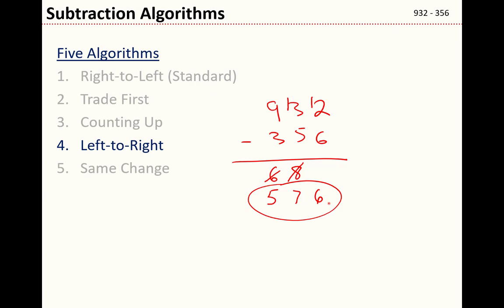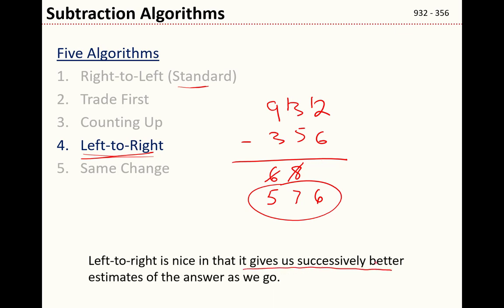I really like this method a lot. If I could magically wave a wand and change the standard method into left to right, I would do this because it gives us successively better estimates of the answer as we go. If I had just stopped as soon as I got the 6, I would have known that my answer was approximately 600. And then after I kept going, once I had the 5 and the 8, I'd have known that my answer was close to 580. And then finally going all the way we get the final answer 576. I really like this method. I tend to use it occasionally if I'm subtracting some numbers. I like the idea that it gives me estimates as I go.